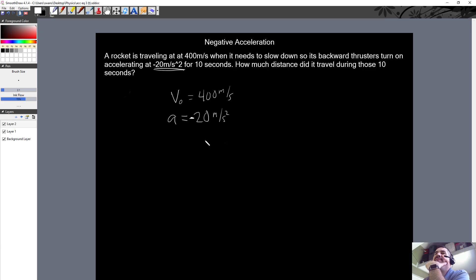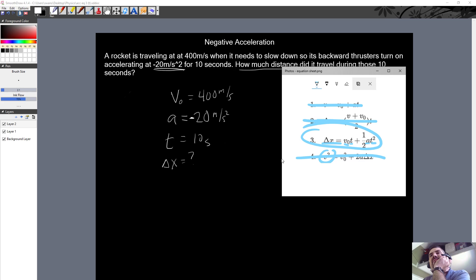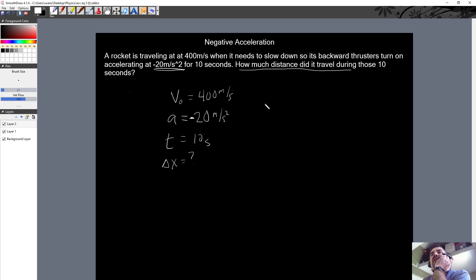So there's the acceleration, but it's negative. Let's get that negative in there. It does it for 10 seconds, so we have time equals 10 seconds. What do they want to know? How much distance did it travel during those 10 seconds? They want to know the displacement during that time, and we do have that equation right here that has all of that stuff.